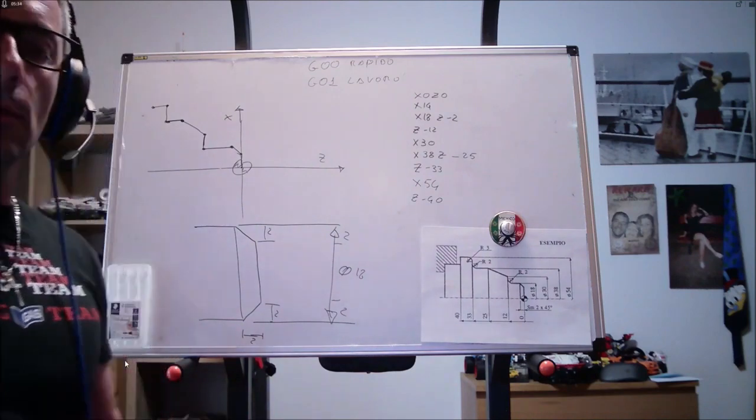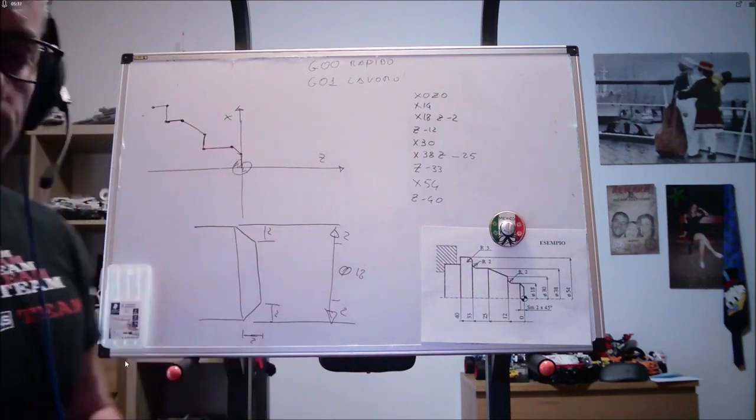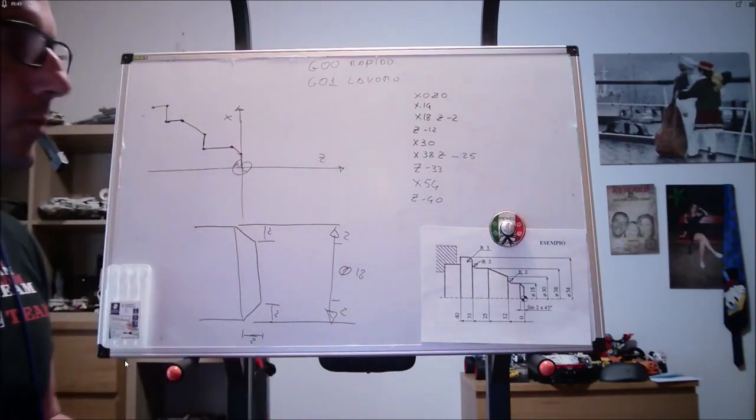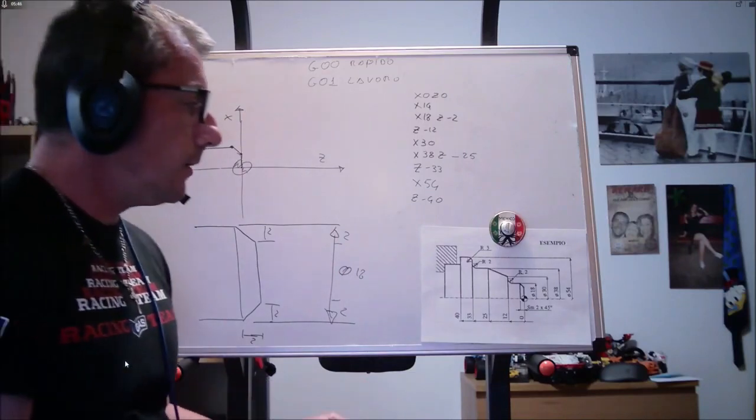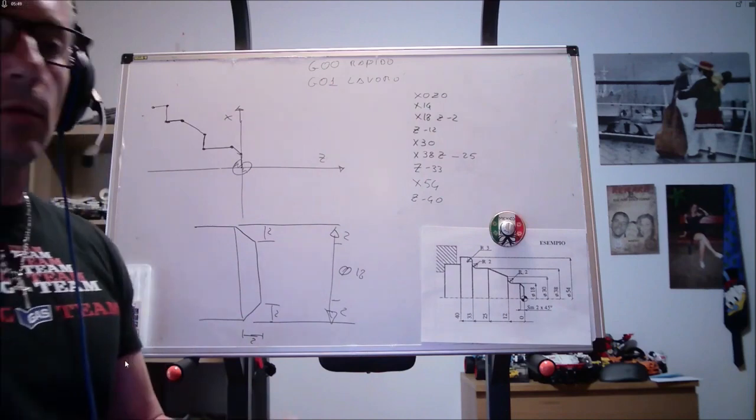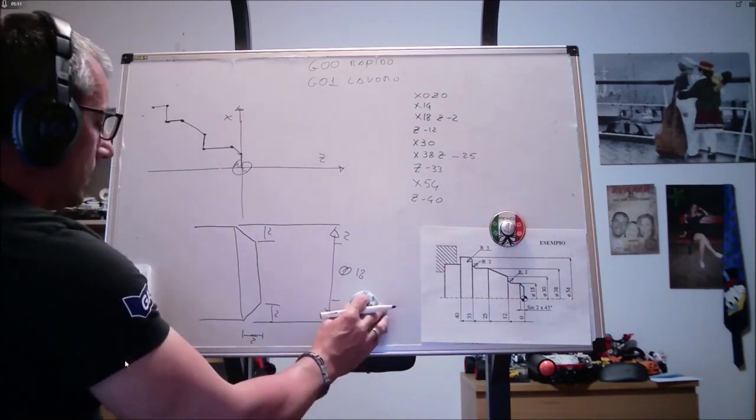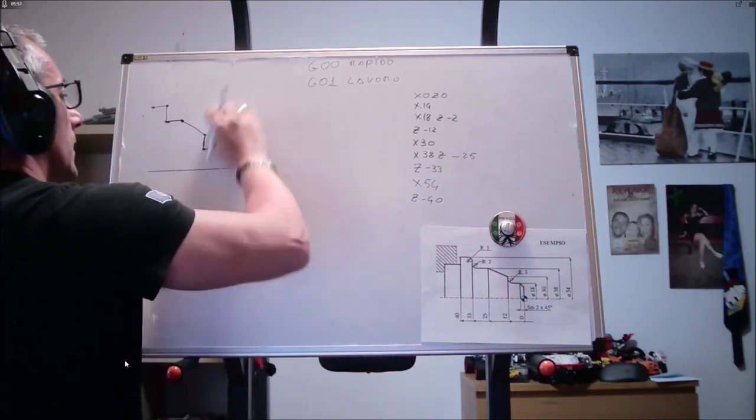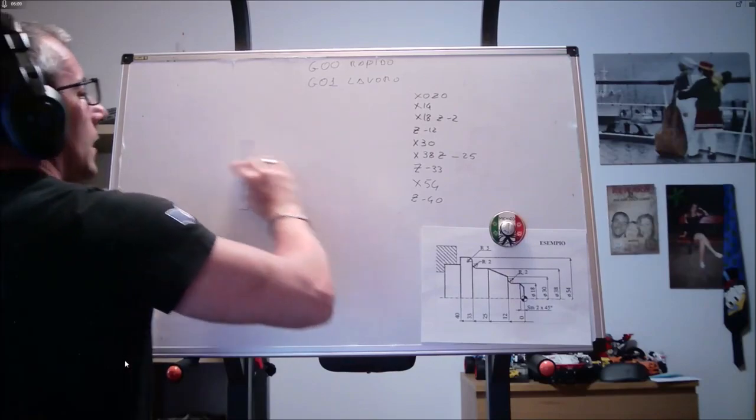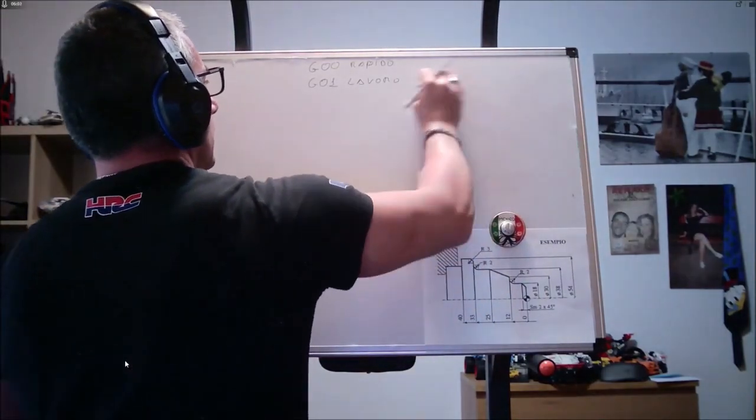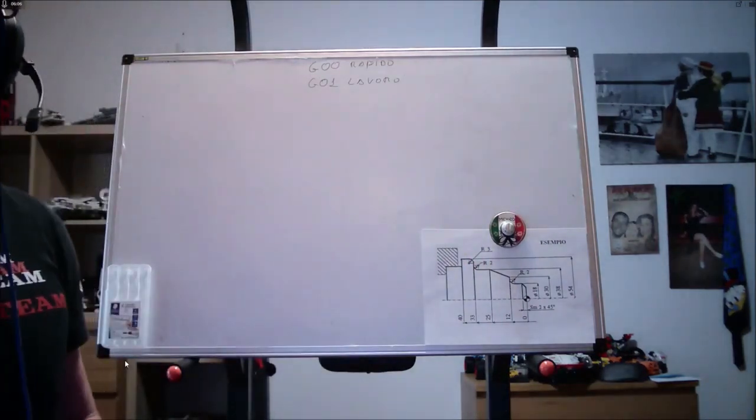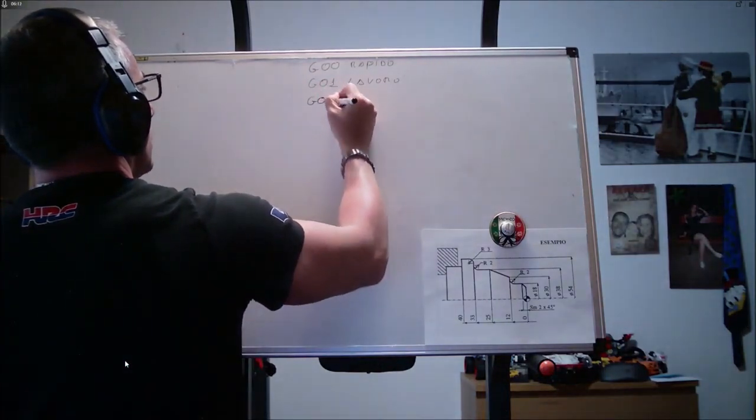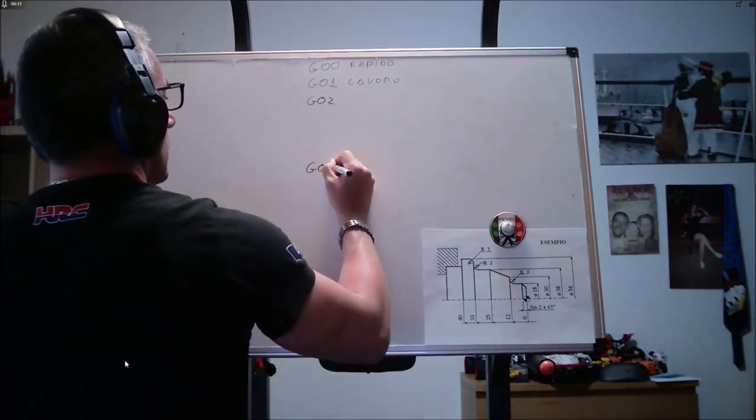Abbiamo capito che G1 ci permette di spostarci nel nostro piano di lavoro in maniera lineare. Ovviamente, i nostri pezzi sono fatti di sezioni di linee rette e sezioni di circonferenze, archi o raccordi che siano.